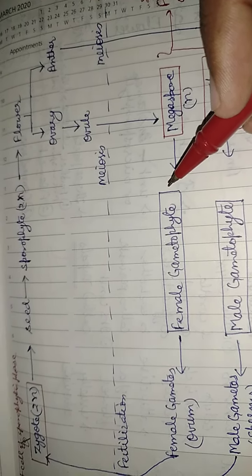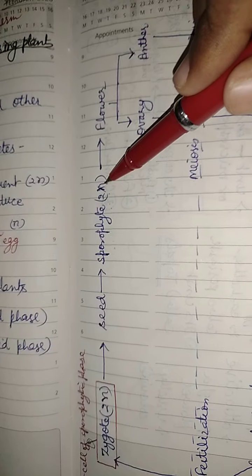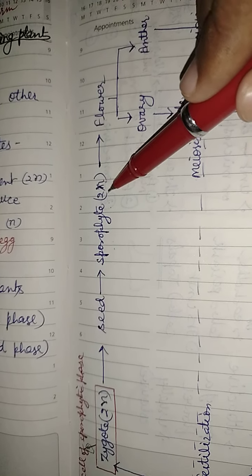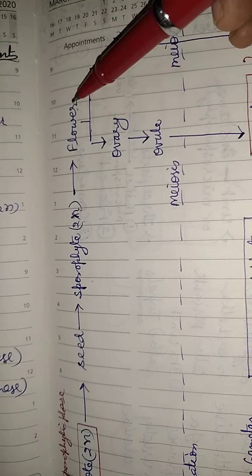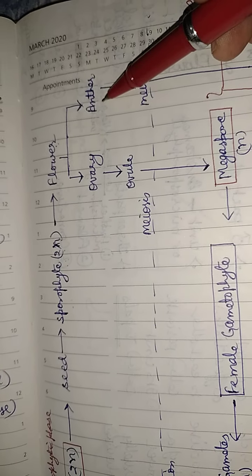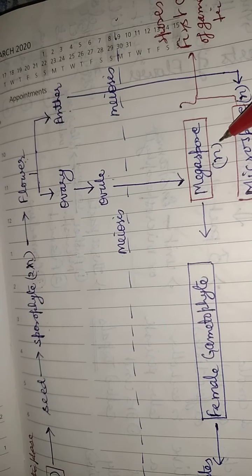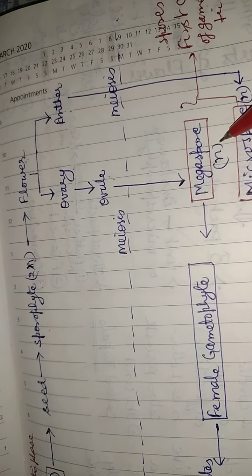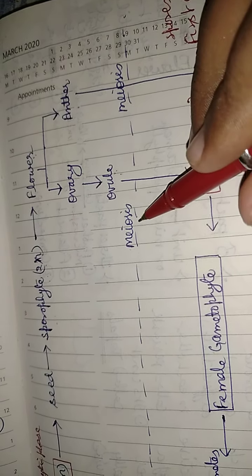A plant is generally sporophytic, that is diploid 2N or 2X. The sporophytic plant gives a flower. In the flower, ovary and anther are found. The ovary contains ovule, and in the ovule megaspores are found. The megaspore is haploid and is formed in the ovule by the process of meiosis, which causes a reduction in the number of chromosomes.